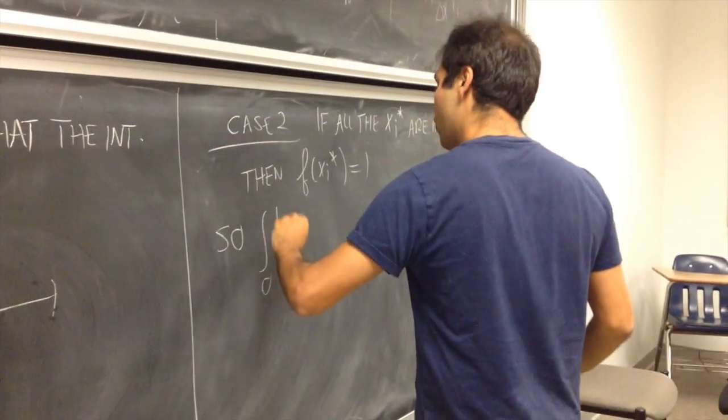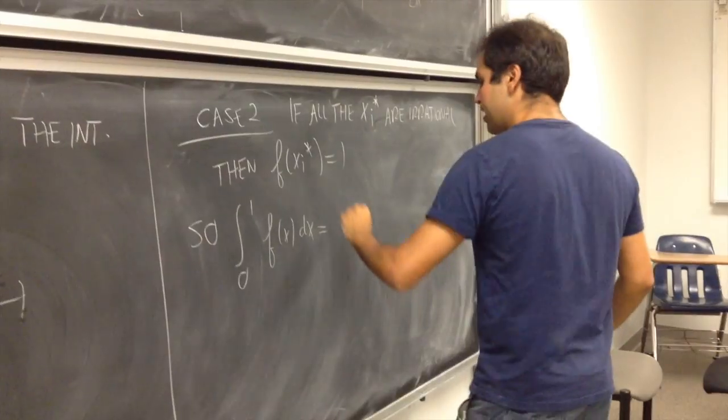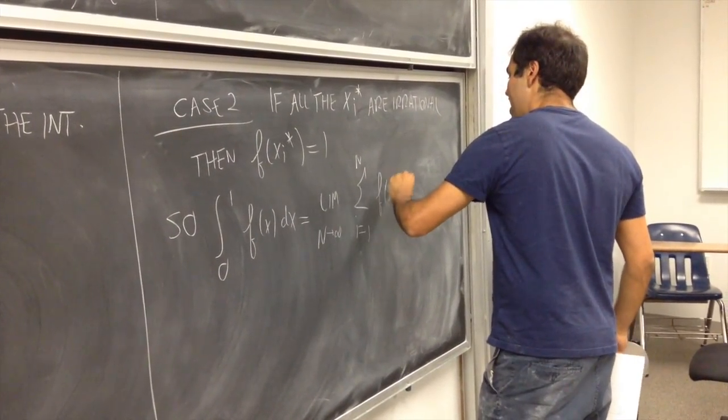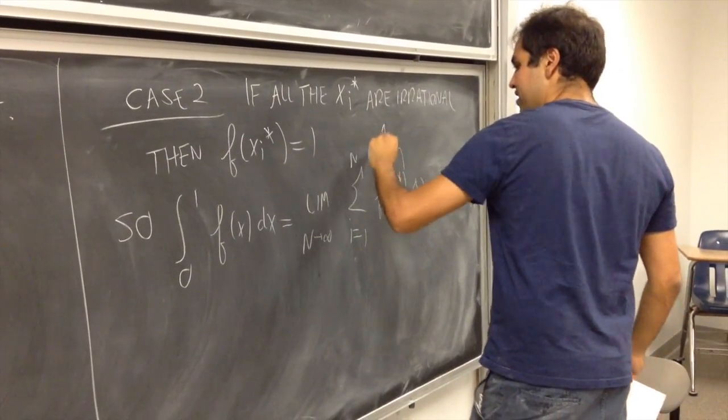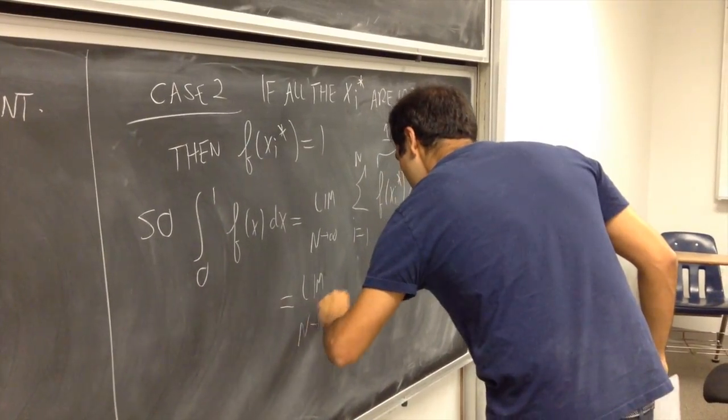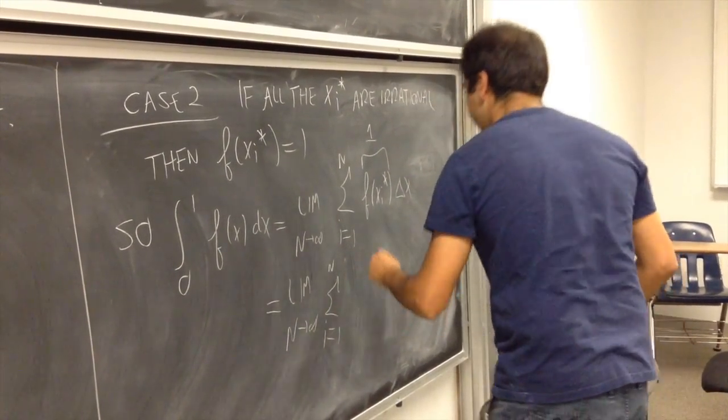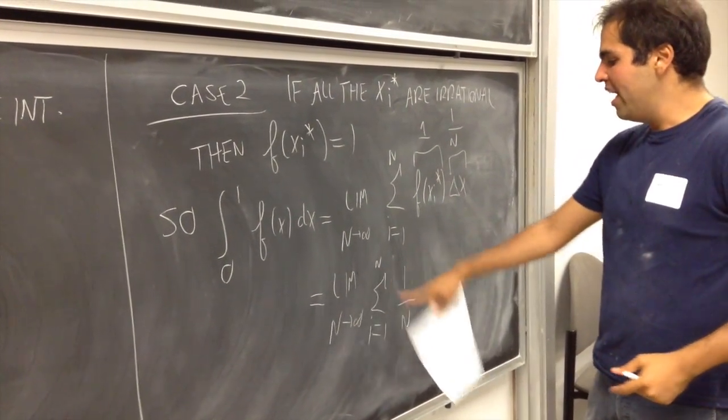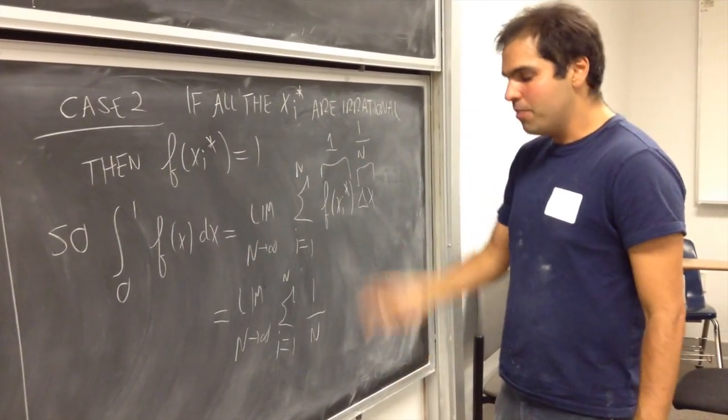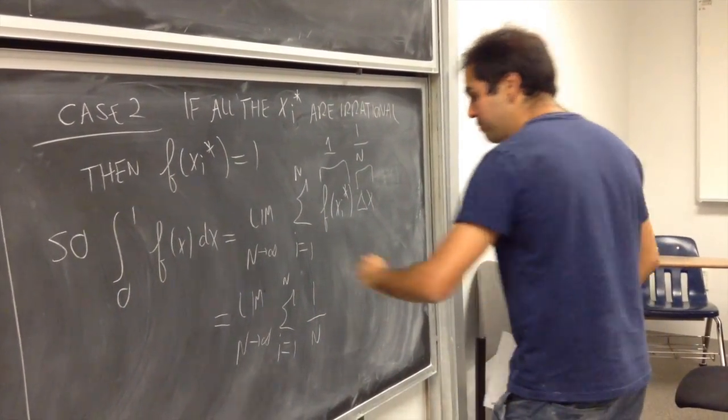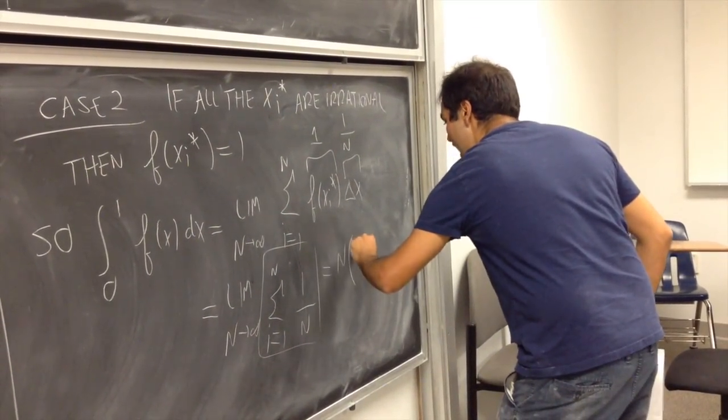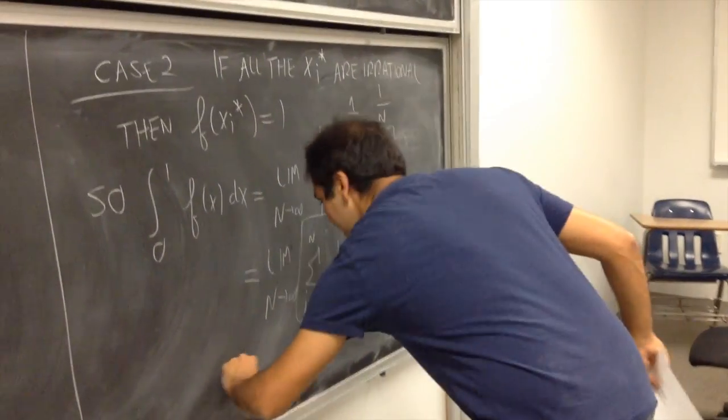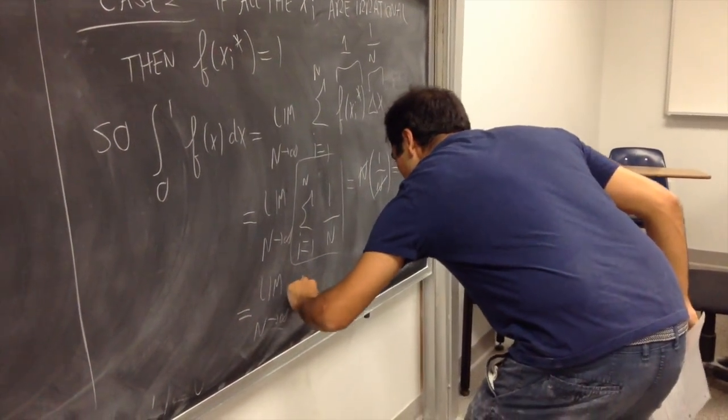So, integral from 0 to 1 of f of x dx, that's equal to, again, limit n goes to infinity of sum from 1 to n of f of xi star delta x. This is 1, so it's limit n goes to infinity, sum from 1 to n of delta x, which is, again, 1 over n. But look, the sum from 1 to n of 1 over n is 1 over n plus 1 over n plus 1 over n plus 1 over n, all this n times. So this whole sum equals n times 1 over n. The point is this does not depend on i, so that's 1. And so you get limit n goes to infinity of 1, and that's just 1.